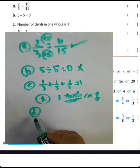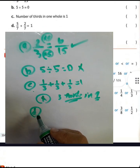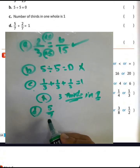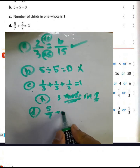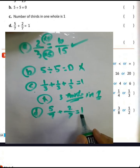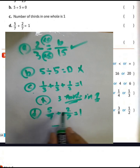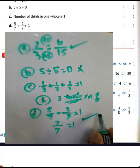Letter D: 5 over 7 plus 2 over 7. It will equal 1. True or false? It will be true because 5 plus 2 equals 7, giving 7 over 7, which equals 1. So it is true.